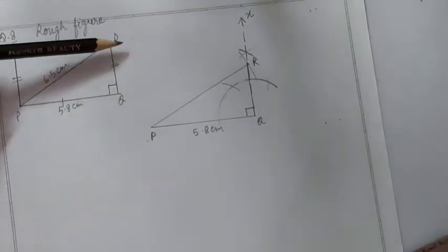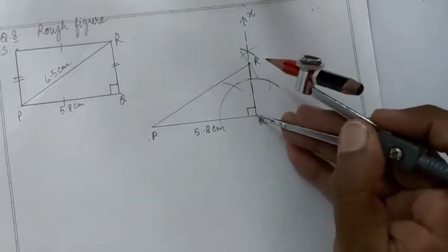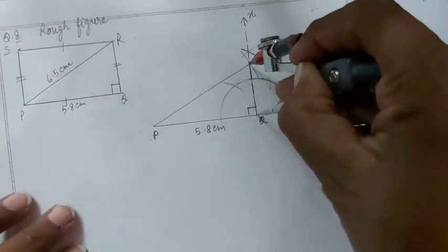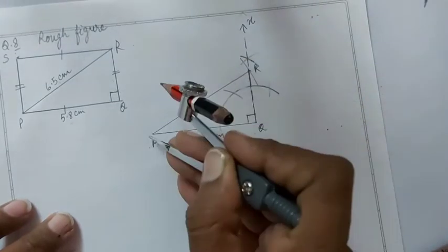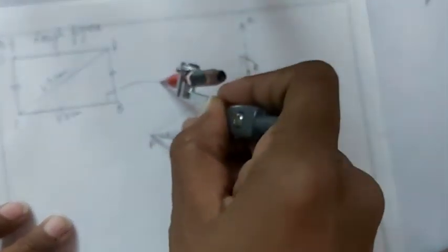Now we have to drop PS equal to QR. So we will take radius same as QR with center P and we will cut an arc.